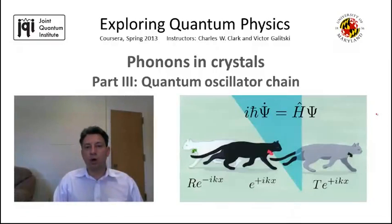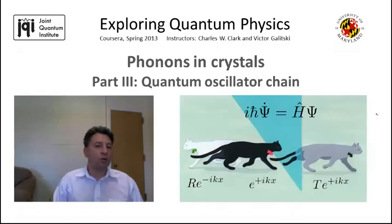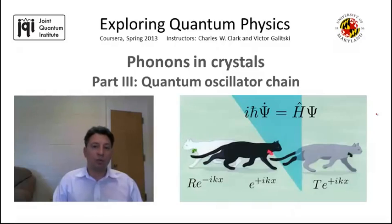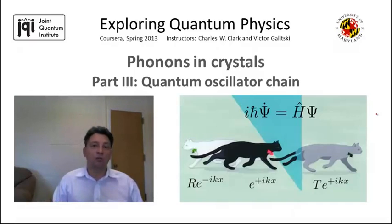In this video, we're going to consider the same problem of an oscillator chain and collective modes in the chain. But now we're going to study quantum collective modes or quantum phonons in a quantum oscillator chain. This problem sounds very complicated because we're going to be dealing with an infinite number of quantum degrees of freedom. But as we shall see, in the end of the day, the results are going to be very similar to those in the classical case. The spectrum of quantum phonons, apart from the zero-point energy, is going to be identical to the spectrum of classical phonons.